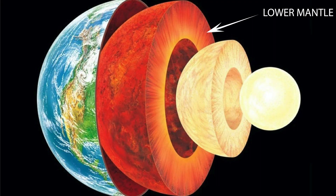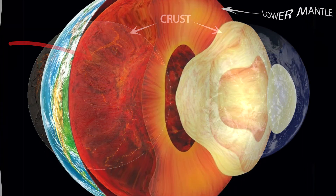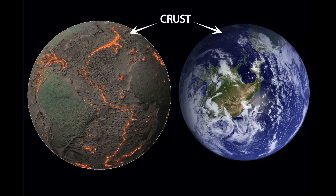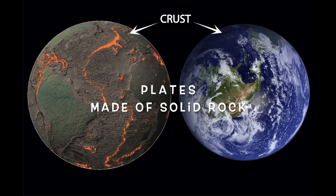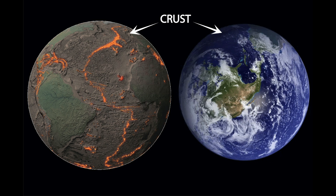This is the lower mantle we saw earlier. So imagine there are plates floating on melted rock, or lava. Earth's outer layer — that is, the crust — is made up of large moving pieces called plates, made of solid rock. All of Earth's land and water sit on these plates.